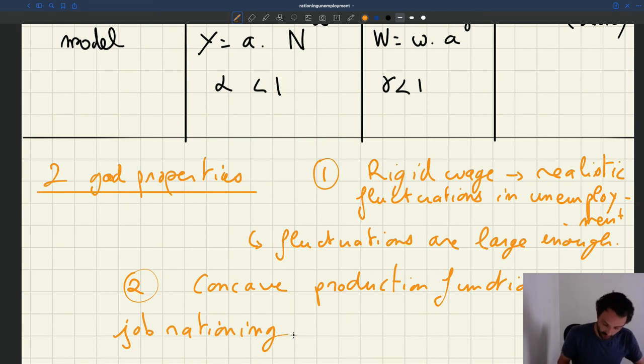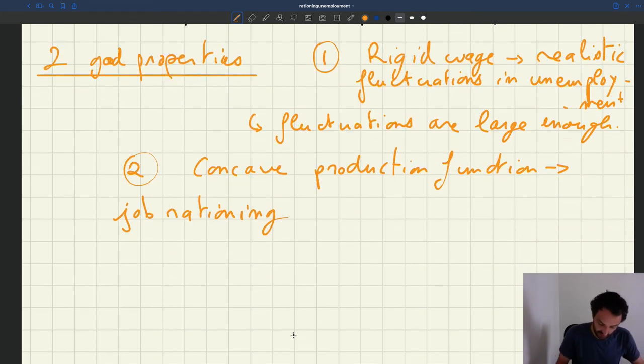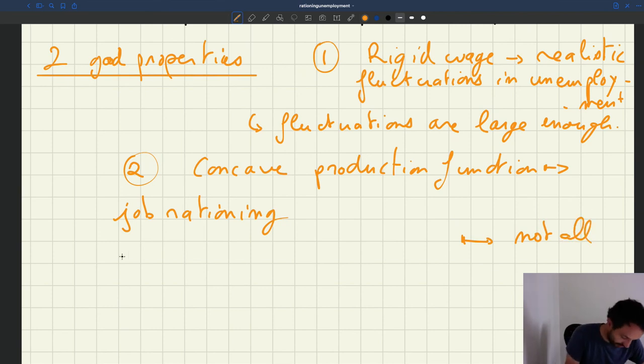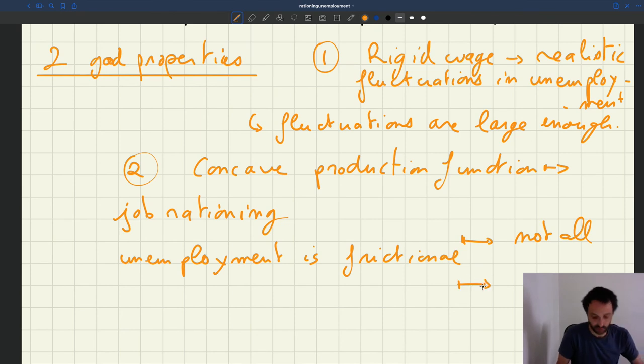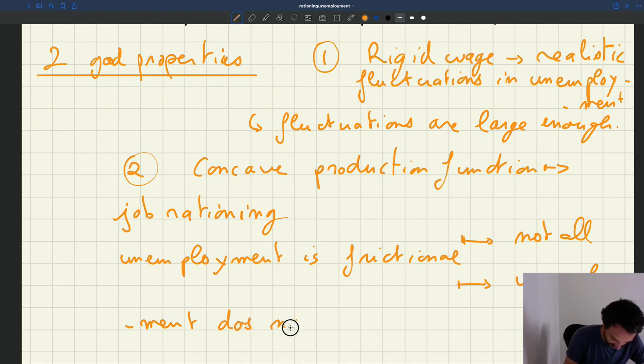What that means is that because we have job rationing, another way to say it is that not all unemployment is frictional. Another way to say that is that unemployment does not vanish if matching frictions disappear.